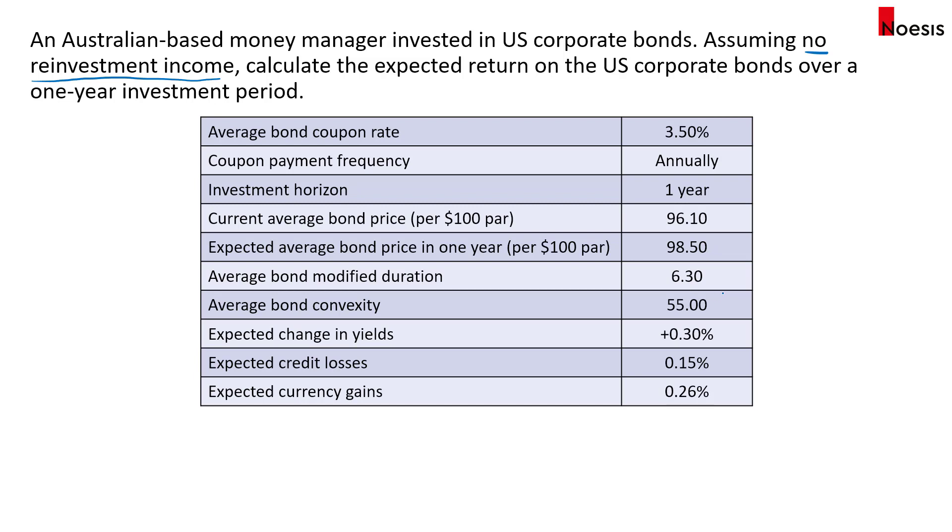The modified duration is 6.3. Convexity is 55. The yields are expected to change by a positive 0.3% or 30 basis points.